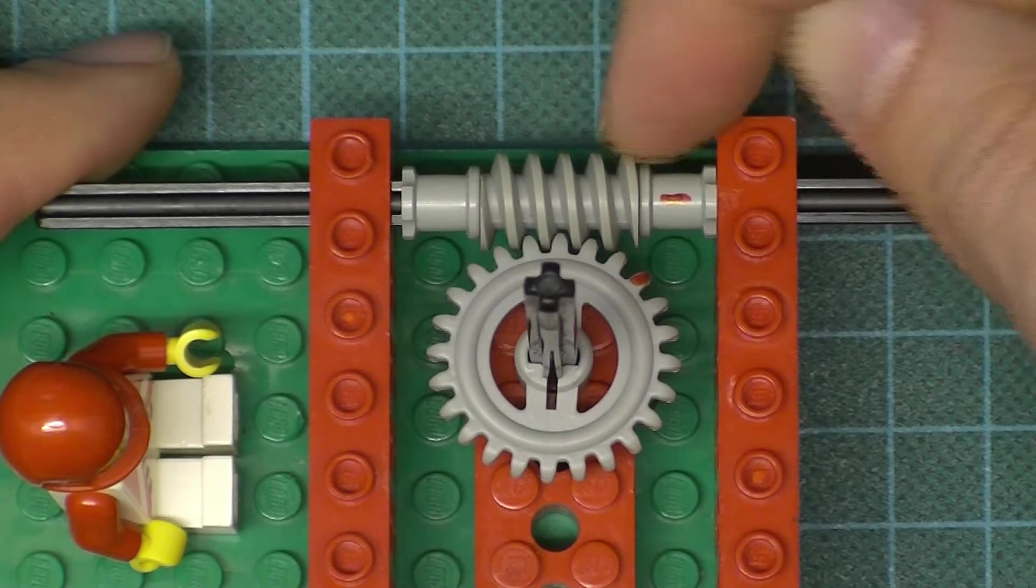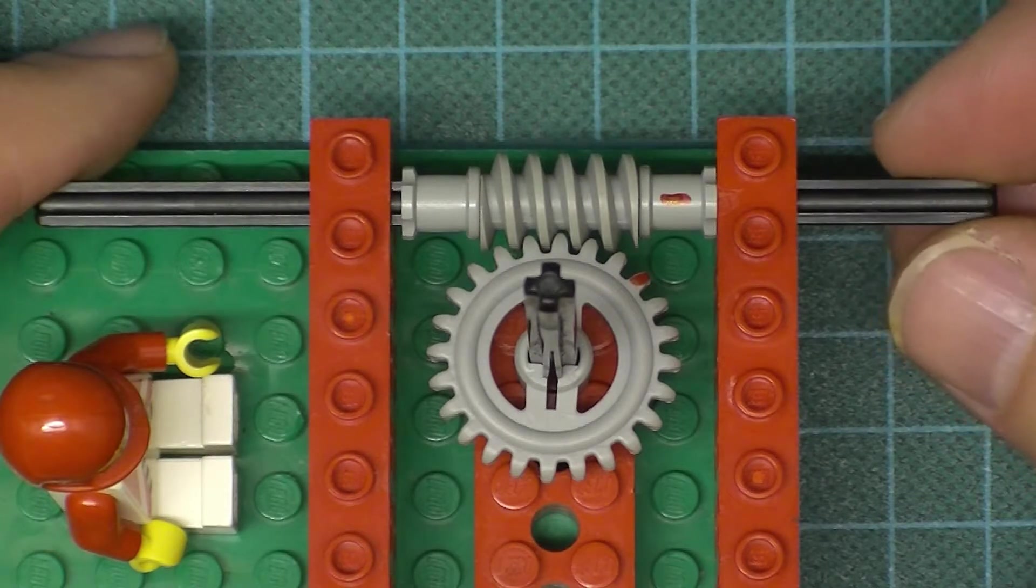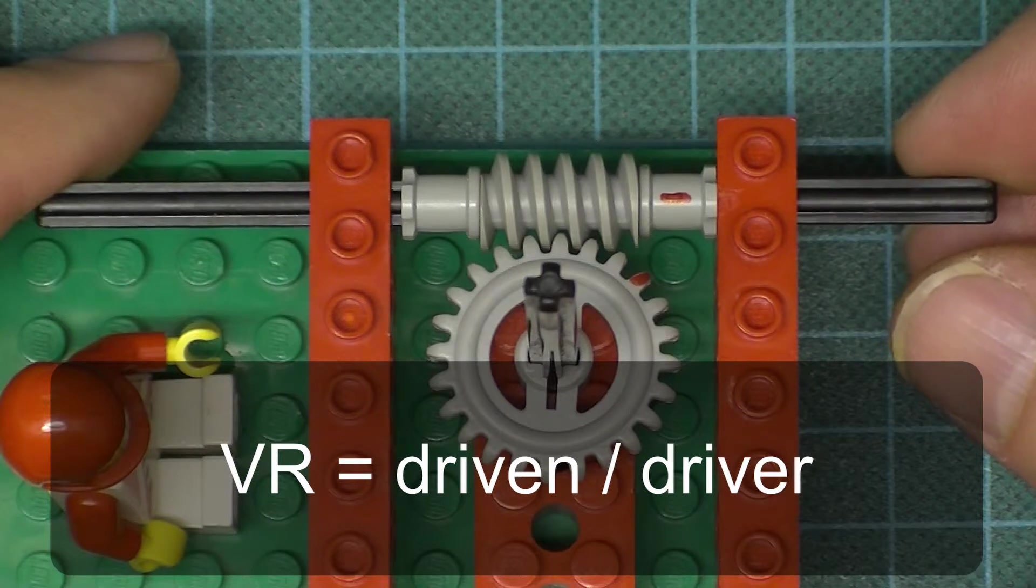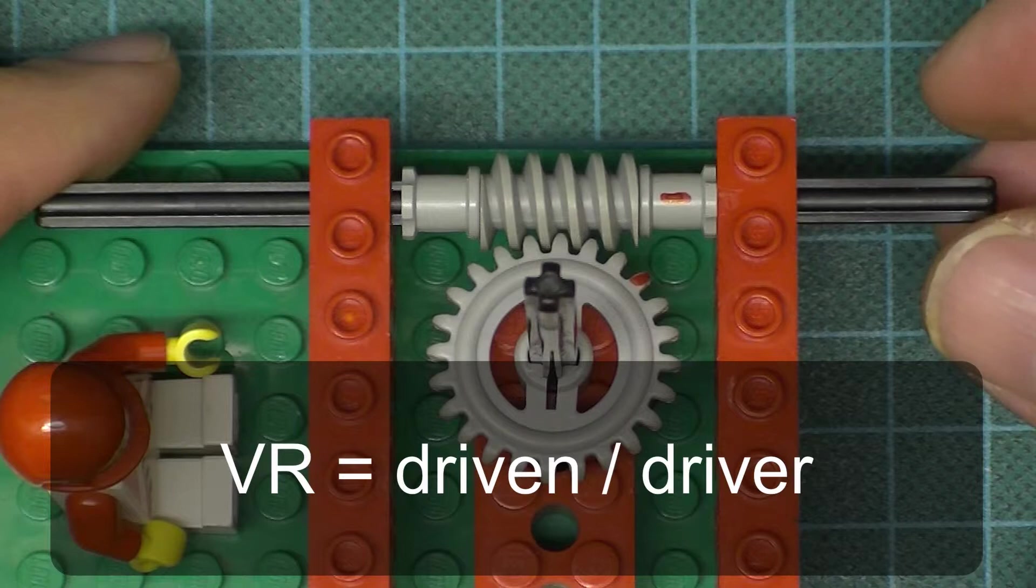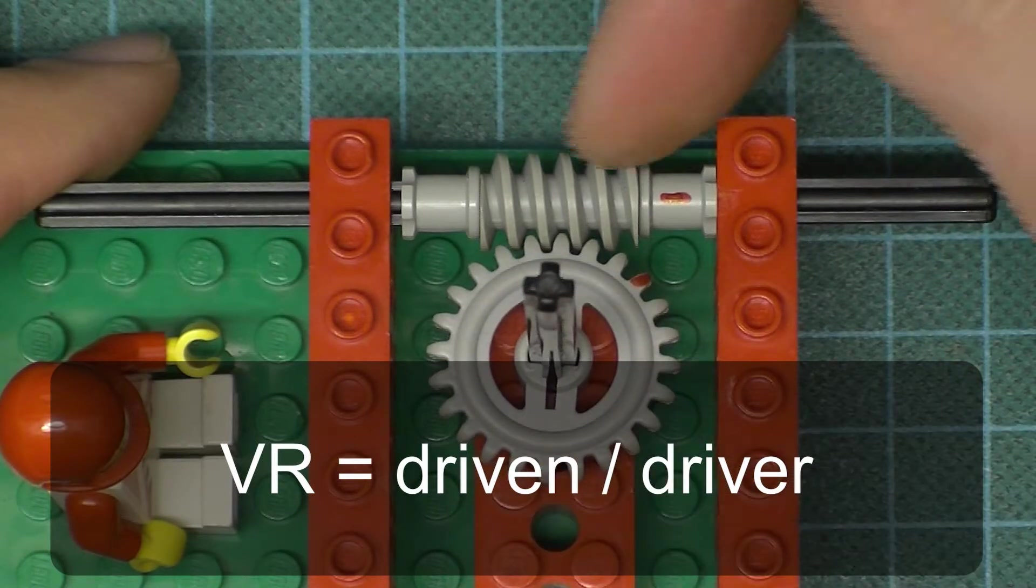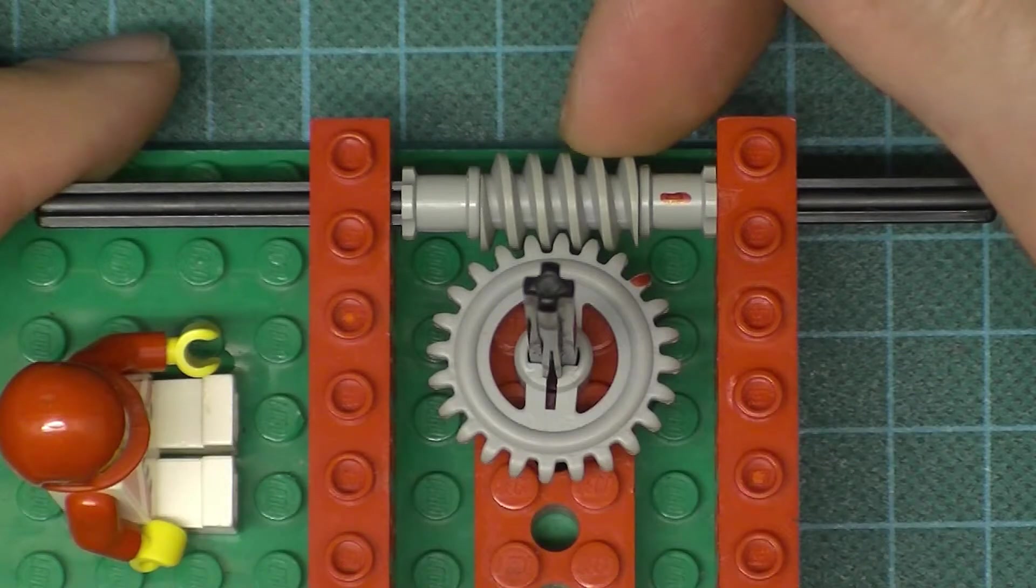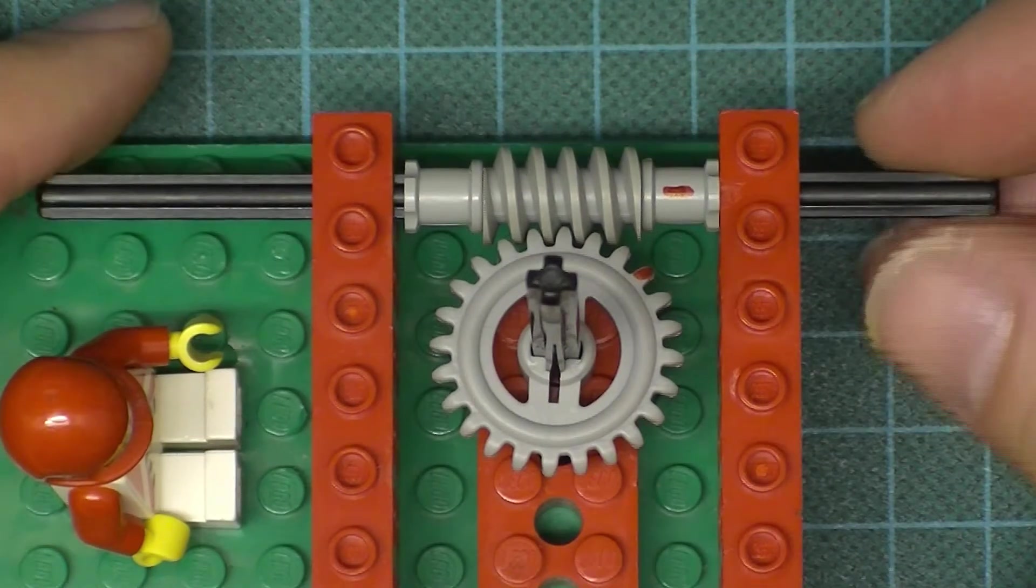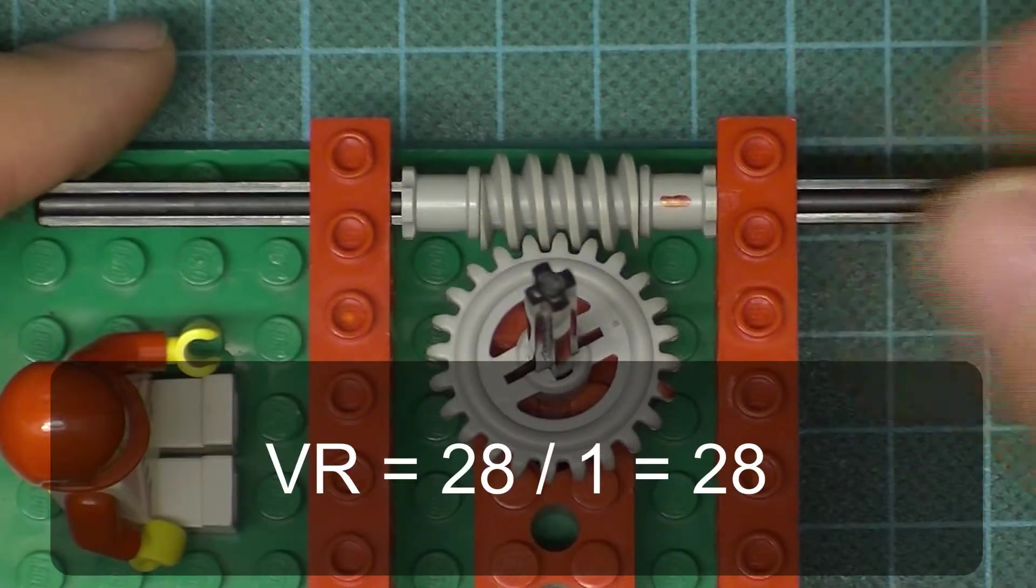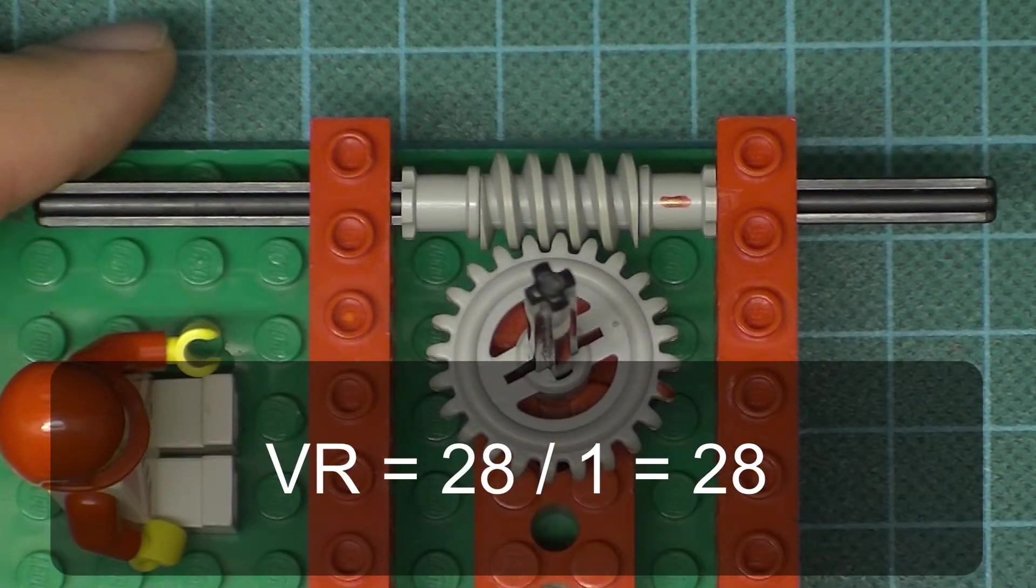Not that this really has teeth. So when we're working on velocity ratio, we normally do the number of teeth on the driven gear over the number of teeth on the driver gear. But in this particular case, the driven gear has 28 teeth, and because it's a worm we just count it as one tooth. So it's 28 over 1, meaning that we would have to rotate this one 28 times for one full rotation of the worm wheel.